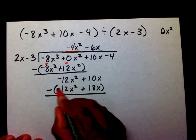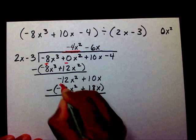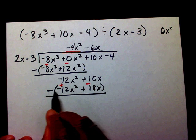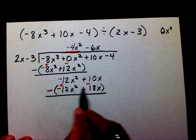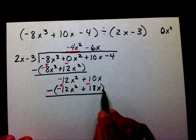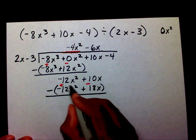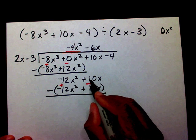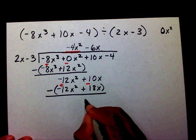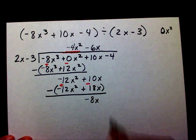So this negative term will become a positive term and this positive term will become a negative term, again because I'm distributing my negative throughout the polynomial. The x squared terms will cancel each other out. That leaves me with 10x minus 18x, which is negative 8x, minus 4.